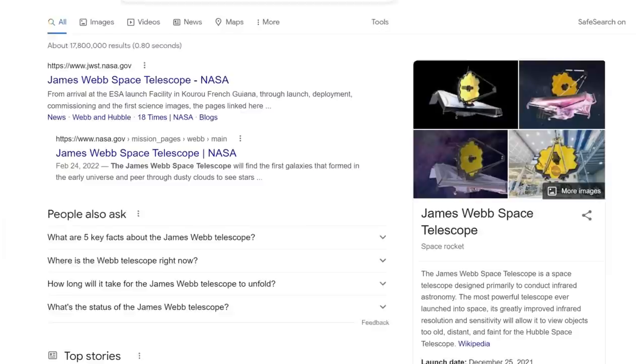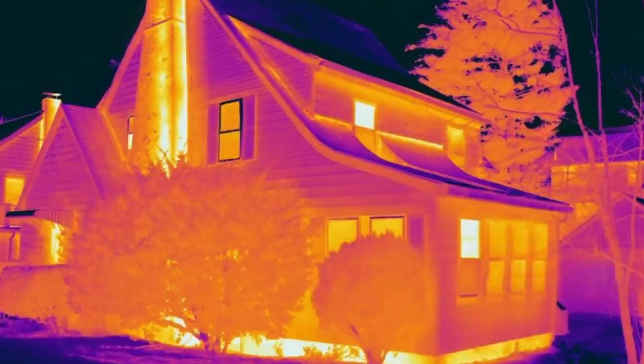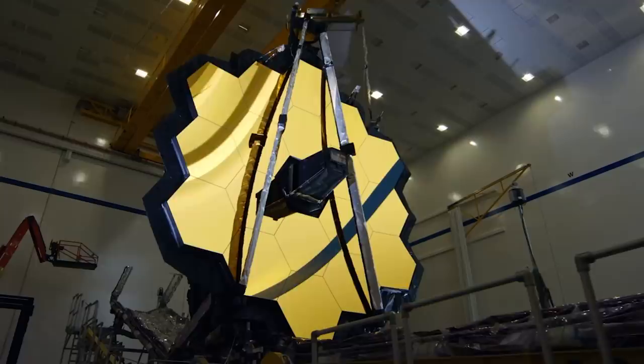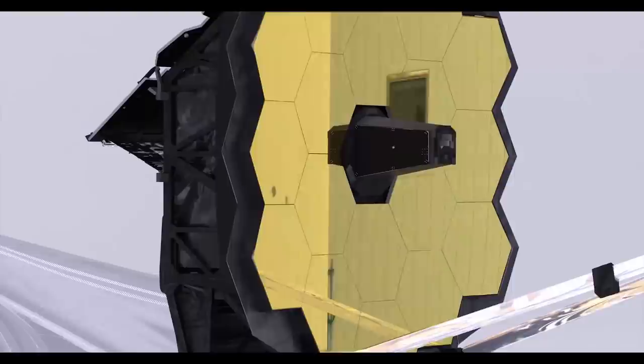There are thousands of articles and hundreds of videos about this new space telescope. So many of you probably know that it operates in the infrared range and is 100 times more sensitive than the famous Hubble Space Telescope. To build such a sensitive device, it was necessary to create the most complicated folding mirror consisting of 18 hexagonal segments.